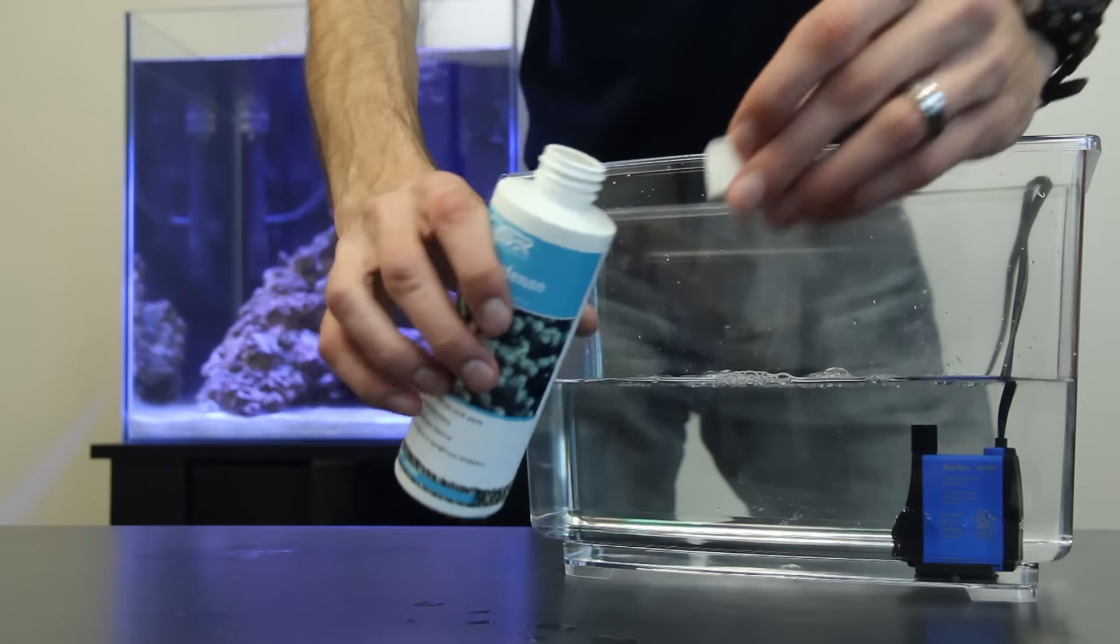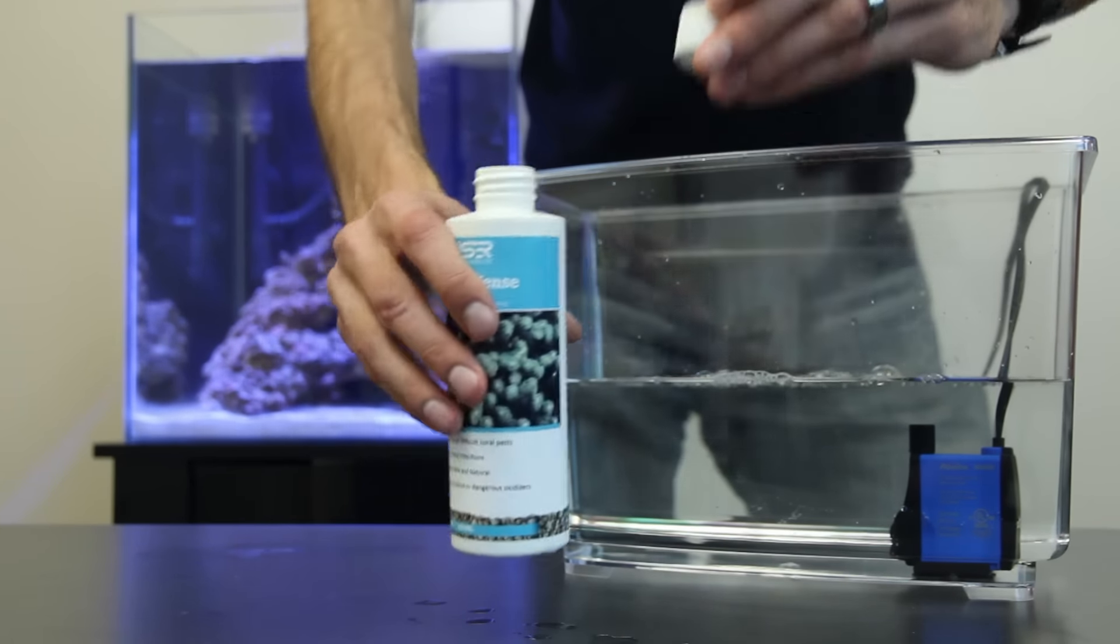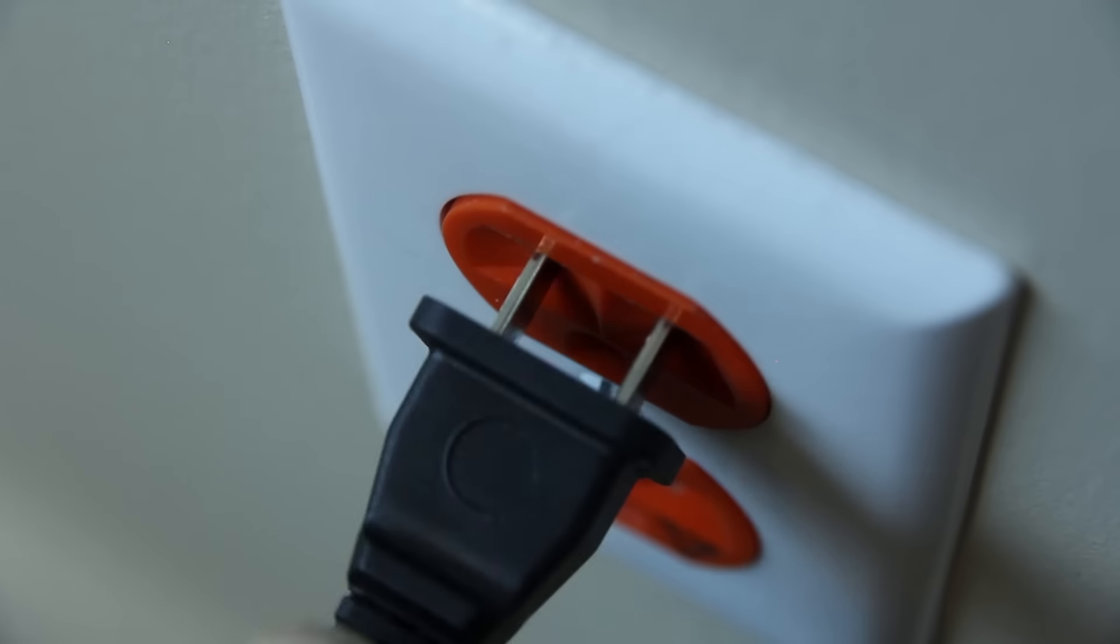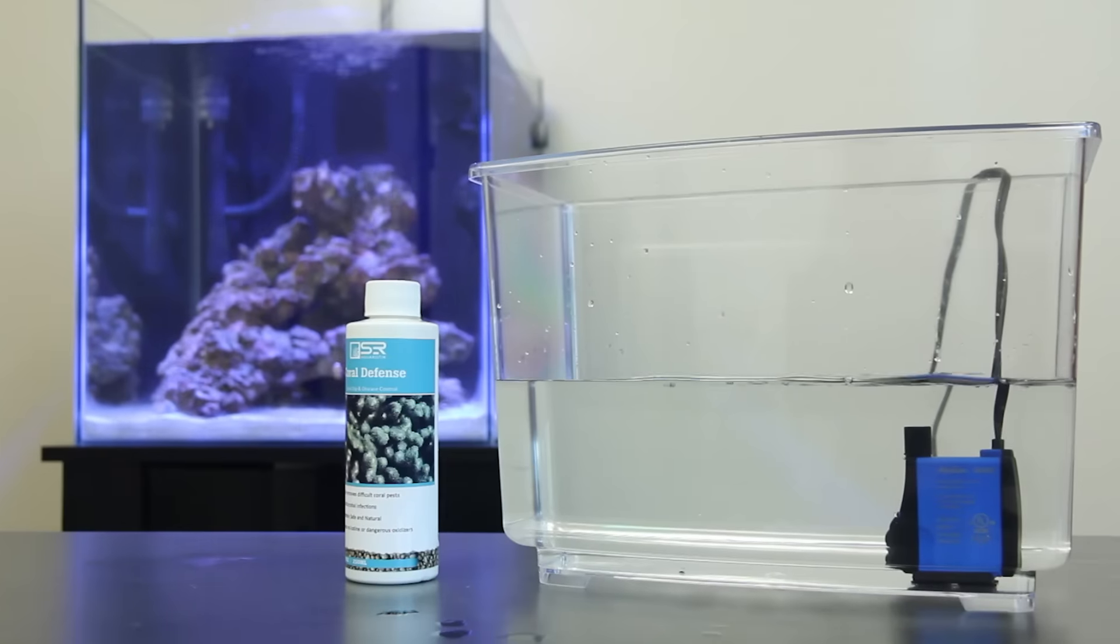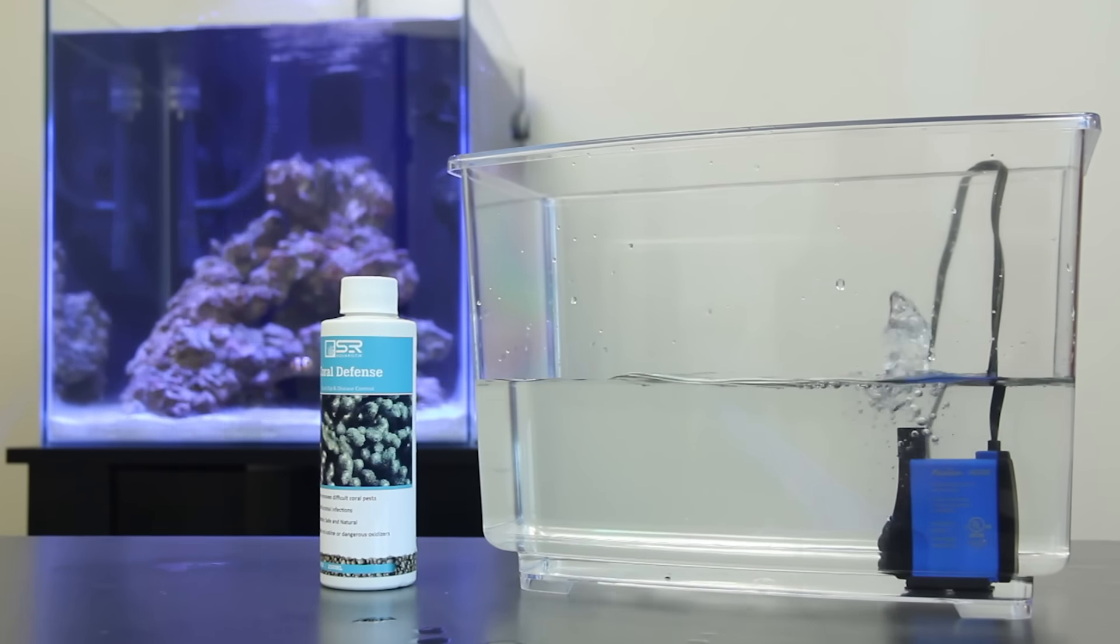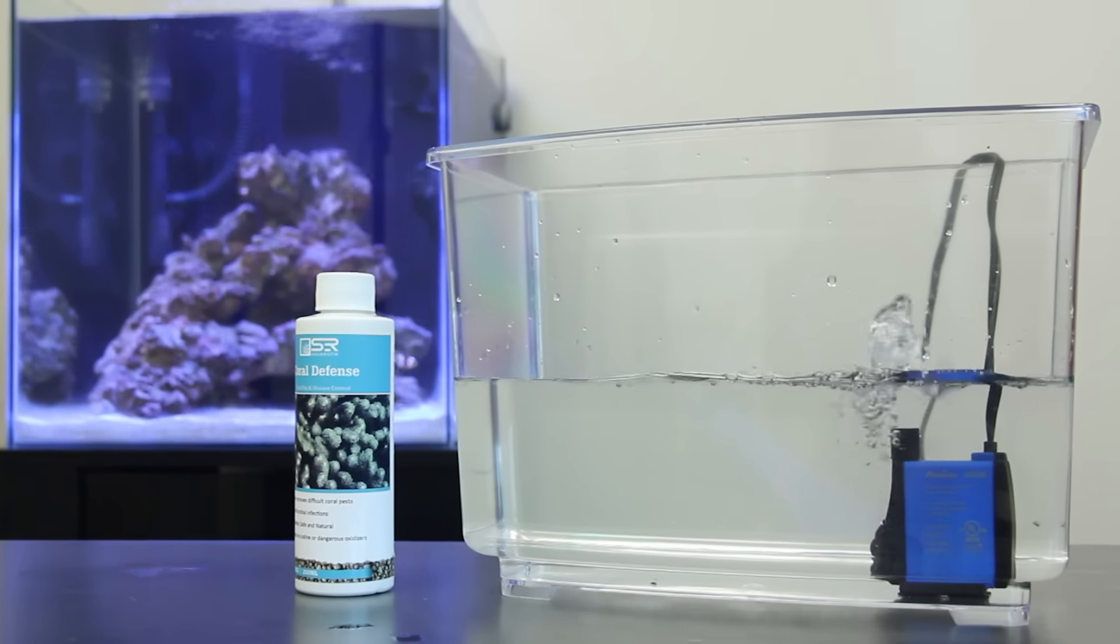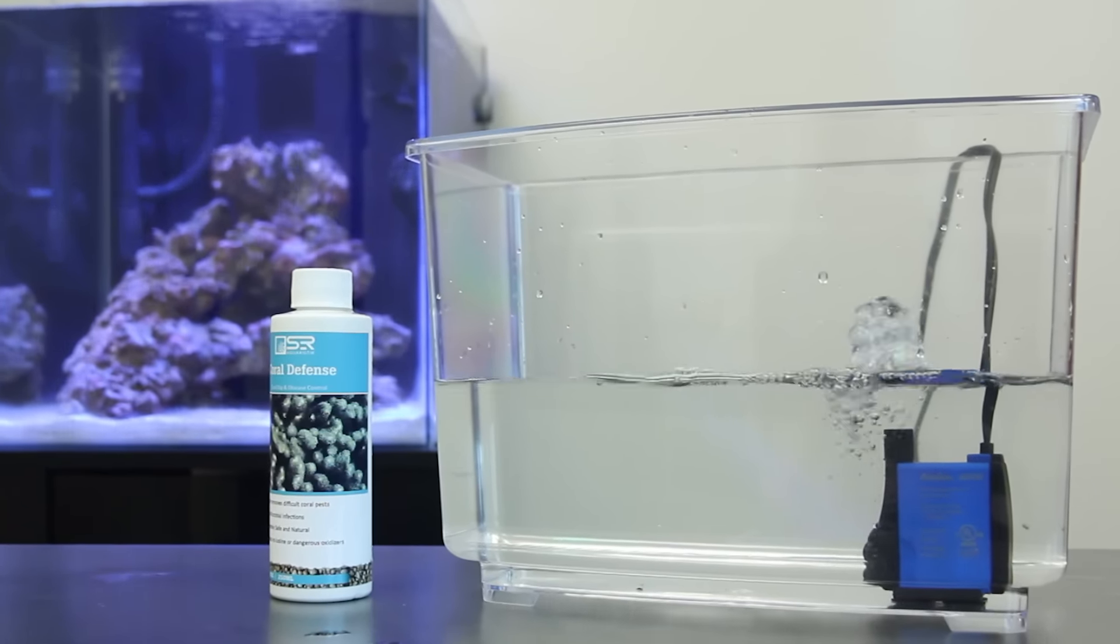You'll need a small pump to keep water moving around the corals. Once you add the coral defense to the water, plug in the pump and get the water circulating. If you don't have a pump available you can gently move the corals through the dip with your hand, but for best results use a pump.